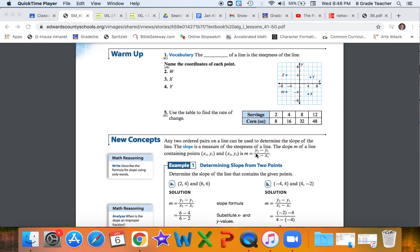Our new concepts has that formula right here for us. Any two ordered pairs on a line can be used to determine the slope of the line. The slope is a measure of the steepness of a line. Slope m of a line contains points x and y and x and y. They're labeled one and two because you're picking two of those points and you have to have this little number designation. This little number is called a subscript. It doesn't mean anything besides the fact that these are the two points that we're using. This is going to be referenced as point one.